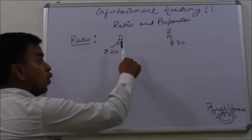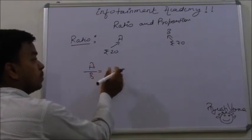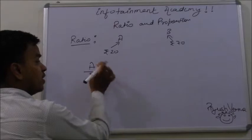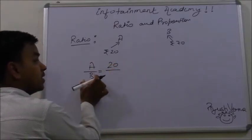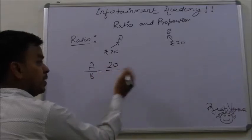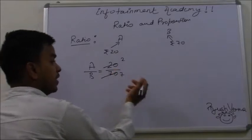Then what will be the ratio of A is to B? In order to find the ratio of A to B, just simply write the quantity A is having, 20, and the quantity B is having, 70. Just simplify it: two tens are 20, two sevens are 70.